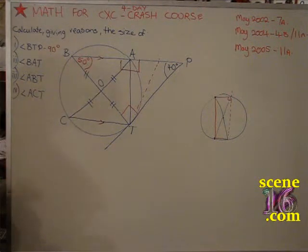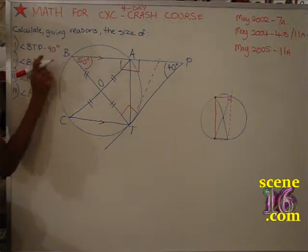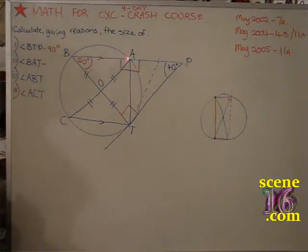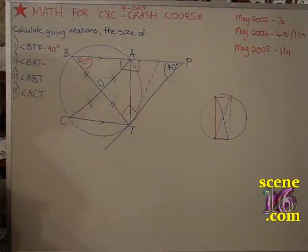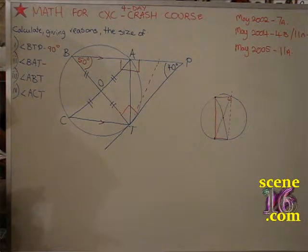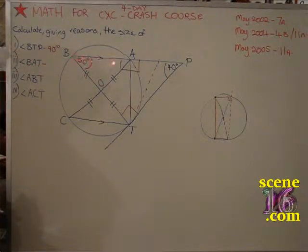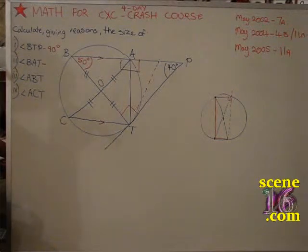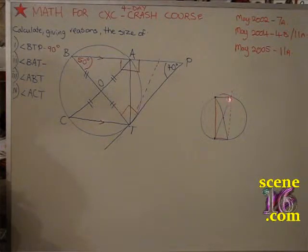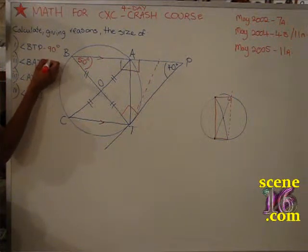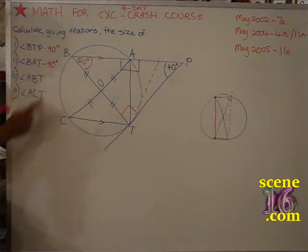That's P. Wait — that's not BAT. BAT is the same. So 50 and 90 is 140, from 180 is 40. We found BAT already is 90. Well, we're thinking that BAT is 90 degrees. Because when we drew a diagram like this, we found that this would be a 90-degree angle, but how is that proof? How do we prove that BAT is actually 90?